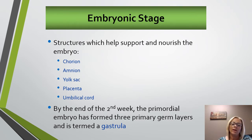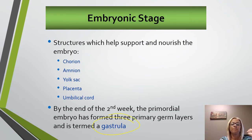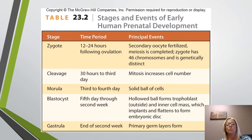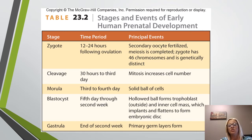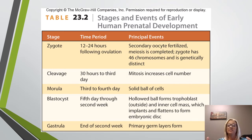By the second week, that primordial embryo has formed those three primary germ layers and we call it a gastrula. We have names for these different stages prenatally: the zygote, which is the first 12 to 24 hours; then cleavage, which is 30 hours to about the third day; then the third to fourth day we have the morula, which is that solid ball of cells; the fifth day through the second week it is termed the blastocyst; and then by the end of the second week, we have those primary germ layers and we call it the gastrula.